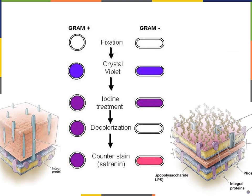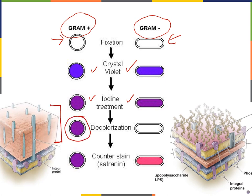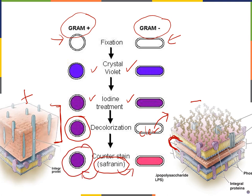Here's another look at the same gram stain process. After fixation and crystal violet, both cell types are violet colored. Iodine traps the crystal violet. Alcohol does not break down the thick peptidoglycan in gram-positive cells, but easily breaks down the thin layer in gram-negative cells, washing away the crystal violet and leaving them clear. Finally, safranin stains both — but the purple masks the pink on the left (gram-positive), while the gram-negative cells on the right clearly show the pinkish-red color.